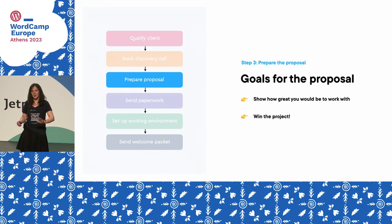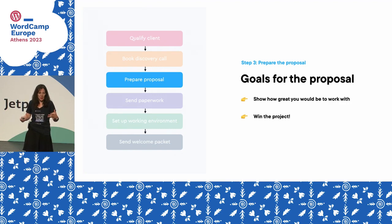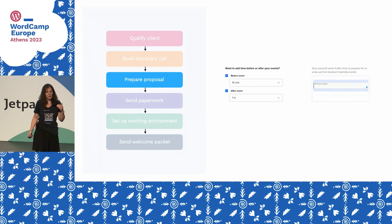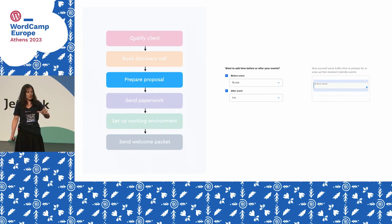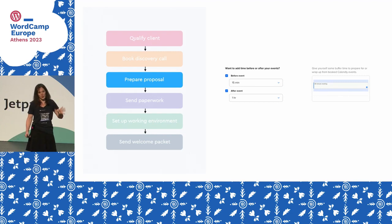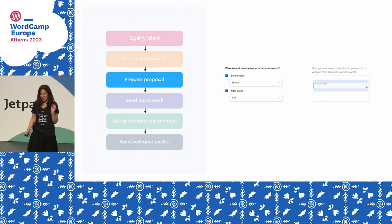For the proposal, two goals: show how great you'd be to work with, and win the project. Doing it quickly is really important — don't make them wait and miss that moment when they're excited. I recommend blocking out 30 to 60 minutes right after the call to write it. Have a solid proposal template where most of it stays the same and you just add project-specific details. Sleep on it, do a quick proofread, and send it the next day.